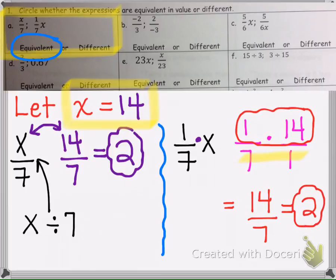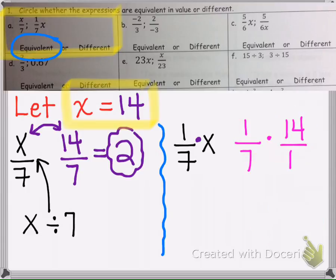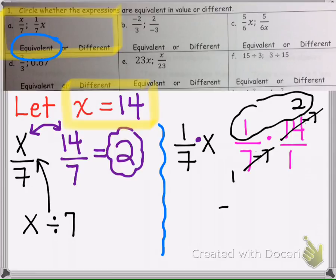We could also cross-simplify diagonally. We can simplify by 7, so that makes a 1 there. Now we multiply straight across: 1 times 2 is 2, and 1 times 1 is 1, and we still get 2.